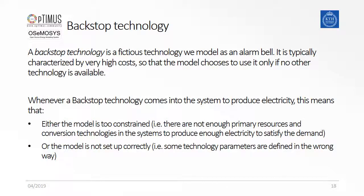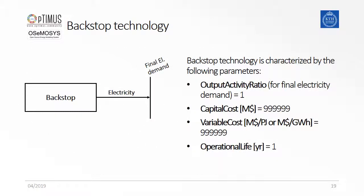To test if our demands are entered correctly before defining any technologies, and also to prevent non-feasible solutions during the modeling process, it is recommendable to define a so-called backstop technology for every demand considered. Those technologies are characterized by very high cost, but they are only producing fuel for which we have defined a demand. Due to the high cost, the technology will only be selected by the model if no other technology can be chosen, which can happen either when the model is too constrained or when the model is not set up correctly. Here we see schematically how a backstop technology and one demand can be modeled and which parameters need to be defined.